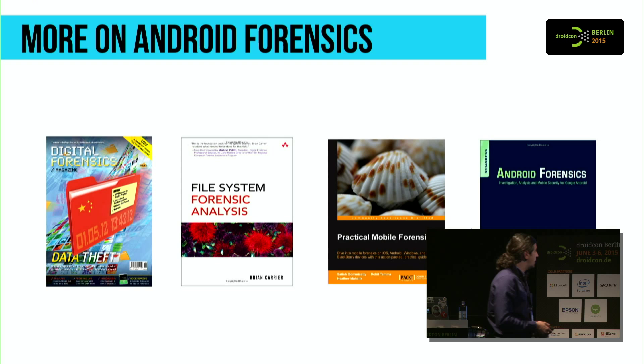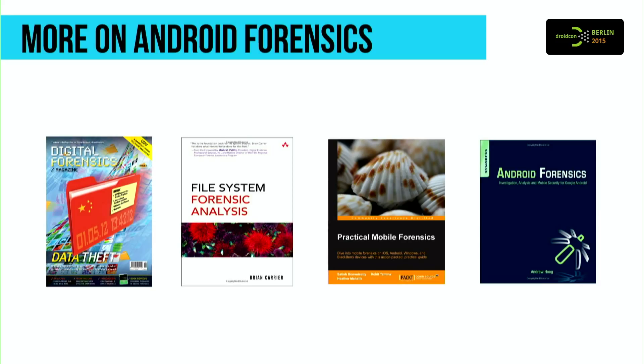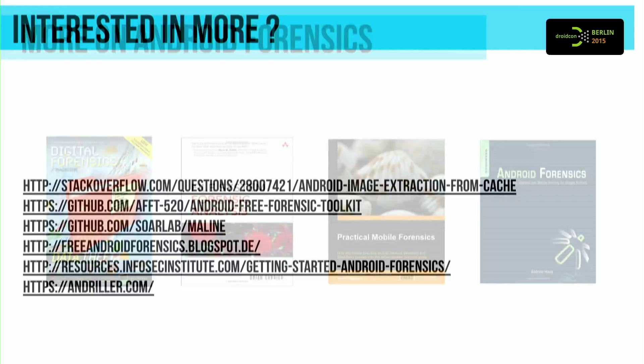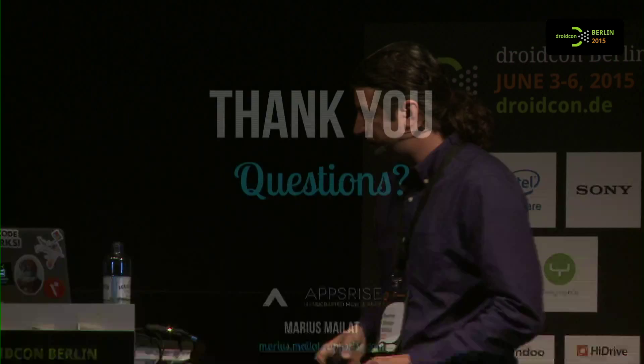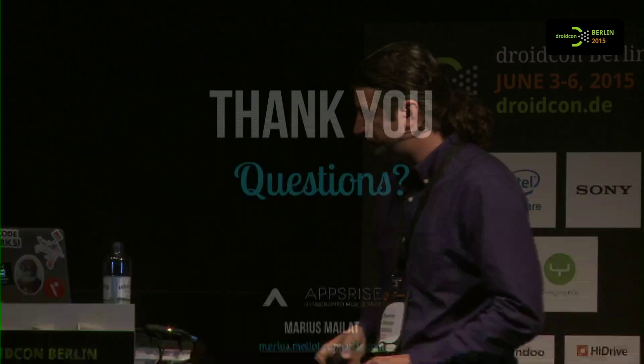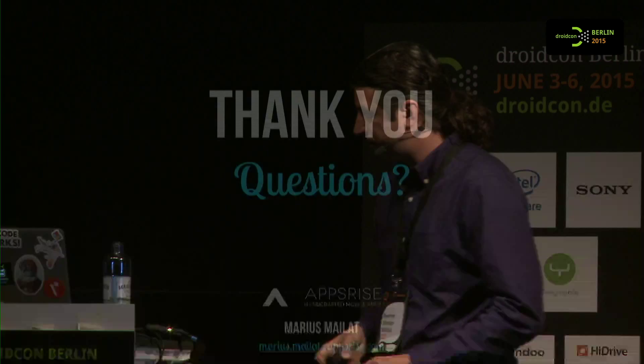If you want to know more, here are four books — take a look at them. Some topics may not be current anymore, but they contain extremely good information. At the end, there are some tools. Andriller is a really cool project where you can get a lot of information out of devices, out of the box, and the source code is available. Questions? Thank you.